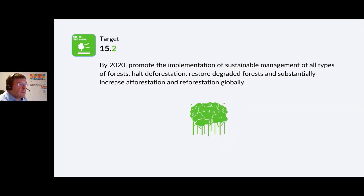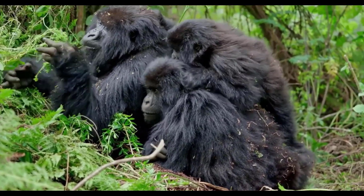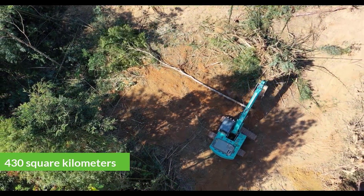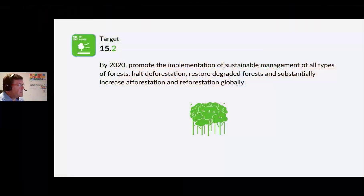Target 15.2: By 2020, promote the implementation of sustainable management of all types of forests, halt deforestation, restore degraded forests and substantially increase afforestation and reforestation globally. Despite this goal, it is estimated that 430 square kilometers of the Amazon was cleared in the first two months of 2022 — more than twice the average over the past 10 years. Protecting forestry and forestry resources is so important.